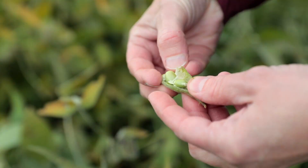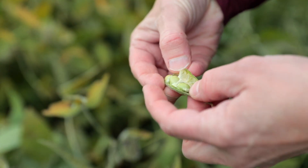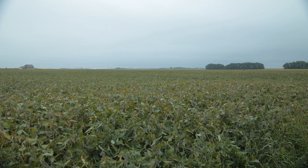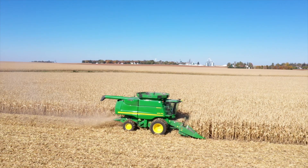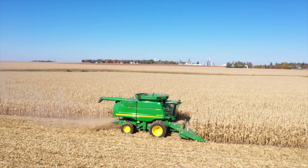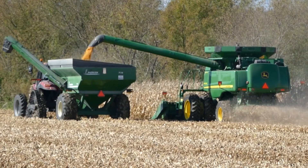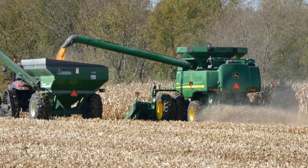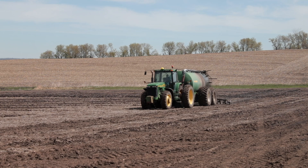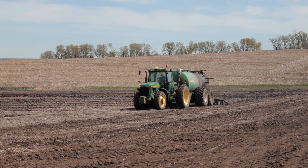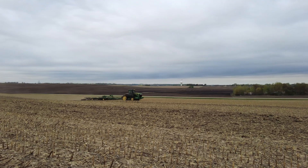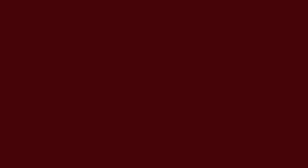Plants do a good job of scavenging this nitrogen, but annual crops such as corn and soybean typically reach maturity in early September, while the soil usually doesn't cool down enough to stop mineralization until late October. This allows nitrate to accumulate in the soil profile, making it subject to loss before next year's crop begins to grow.